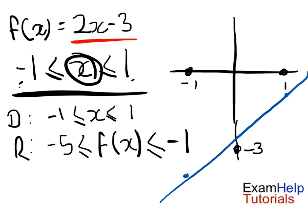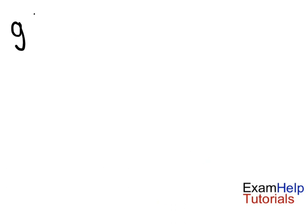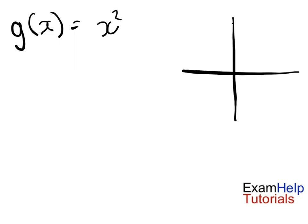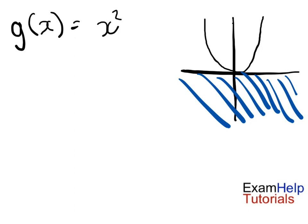Now I'm going to move on to a slightly trickier example. Say we had a function g of x equal to x squared. This is a simple function — g of x equals x squared. What does this mean? Well, our x squared graph is going to touch the origin, and there are no values of y which are below 0.